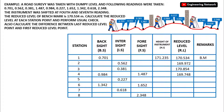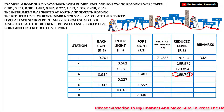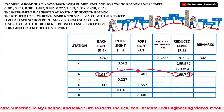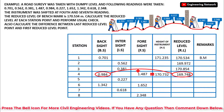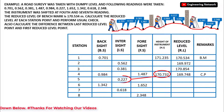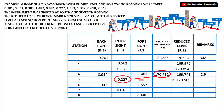Since the instrument is shifted at station 4, I will calculate a new height of instrument here. HI equals the reduced level at station 4, which is 169.748, plus the backsight at station 4, which is 0.984. So the new HI at station 4 is 170.732. At station 5, reduced level equals 170.732 minus 0.227, giving 170.505.